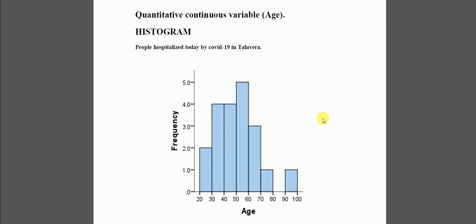The first one is the histogram. A histogram is a graph used for quantitative continuous variables. For instance, H — in this case, H is a continuous variable because between two different values we can always find one more value.